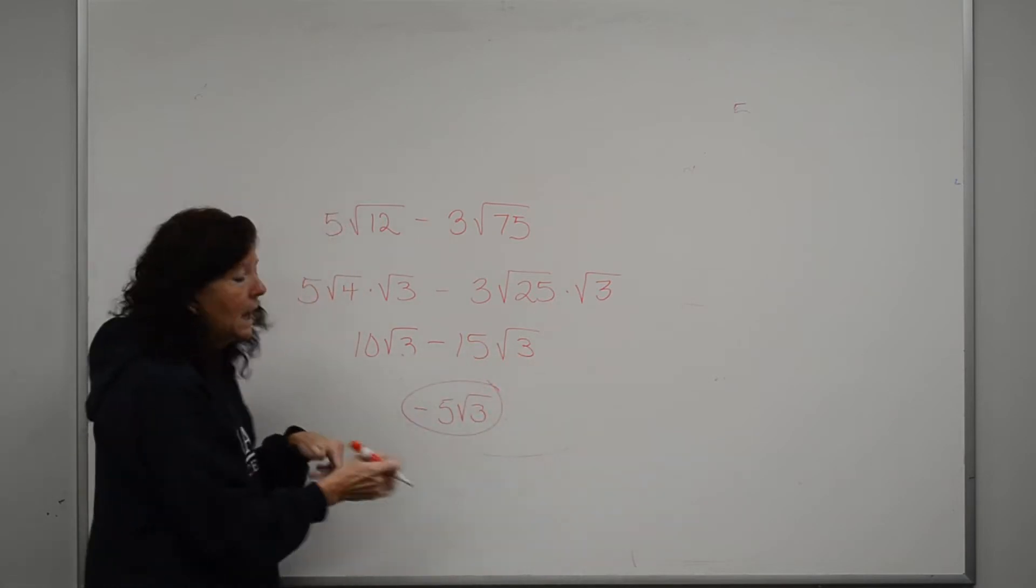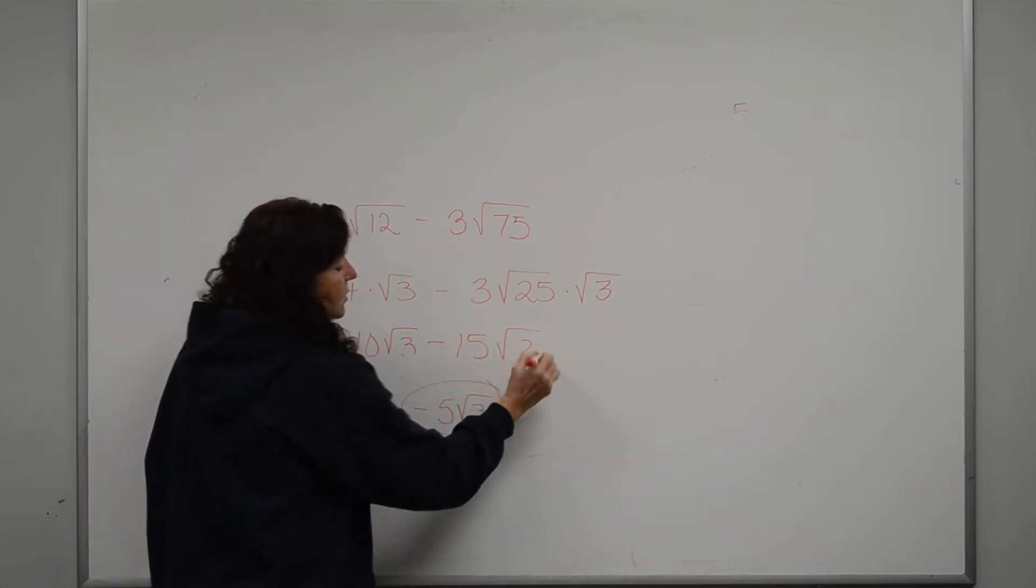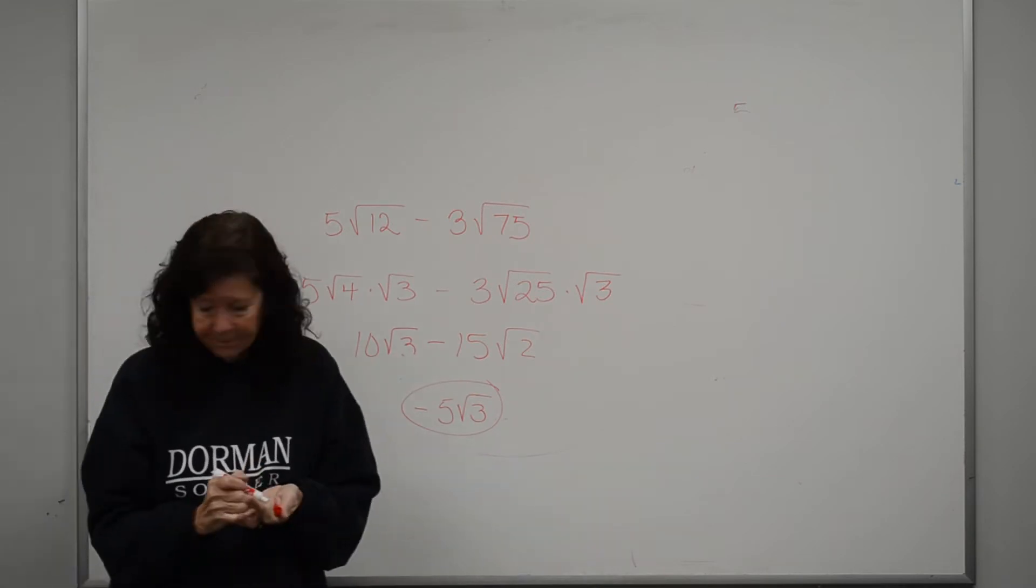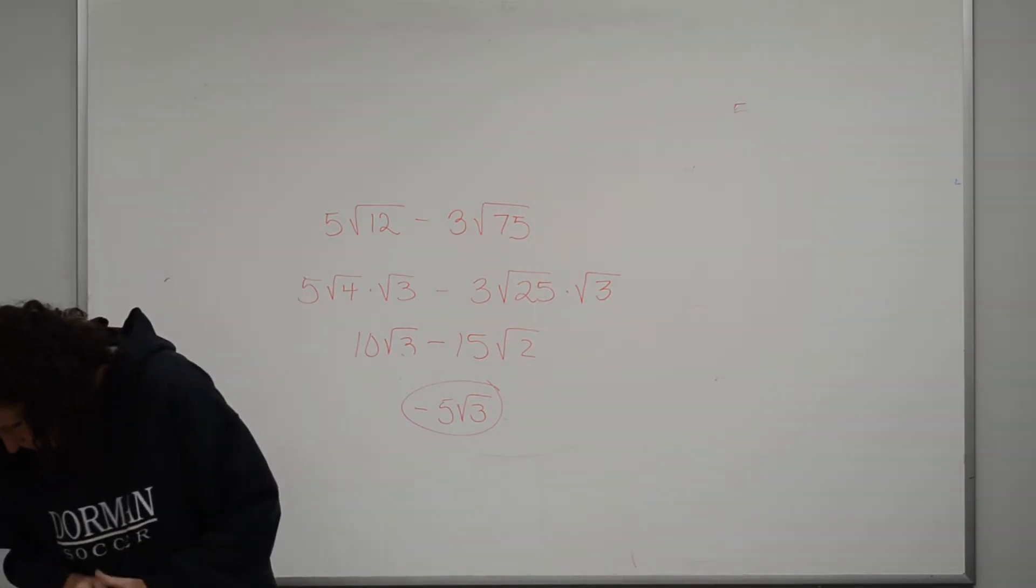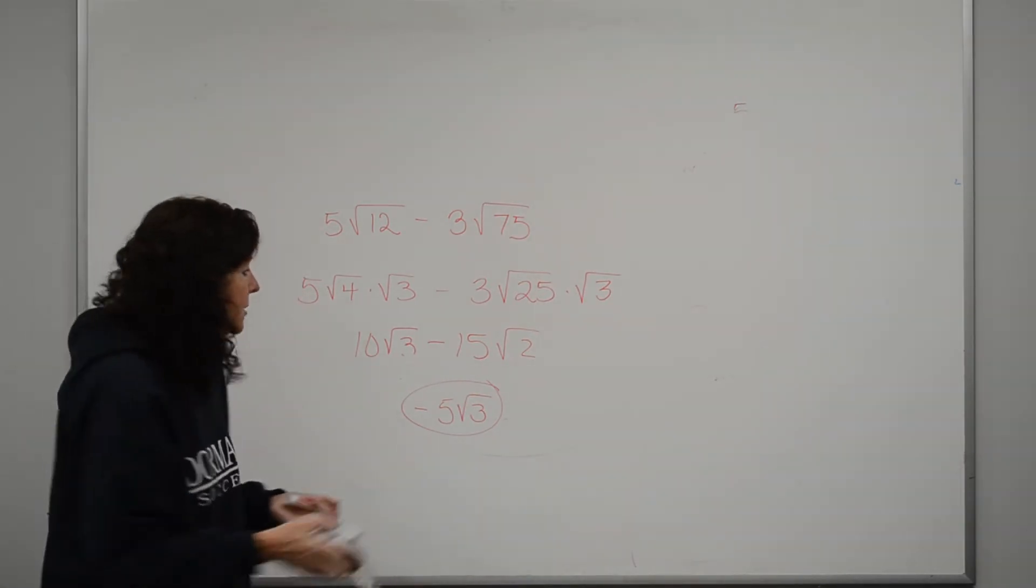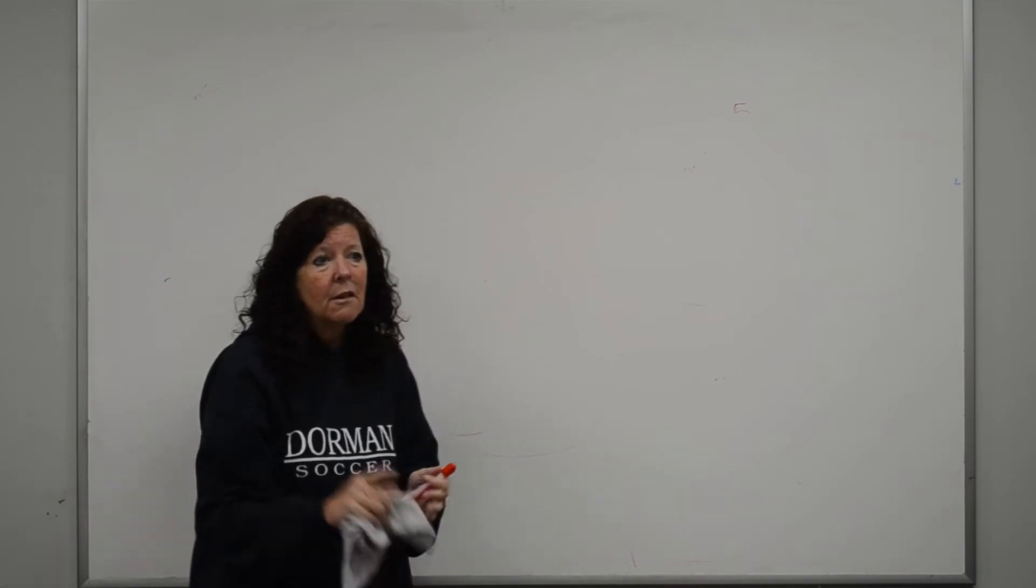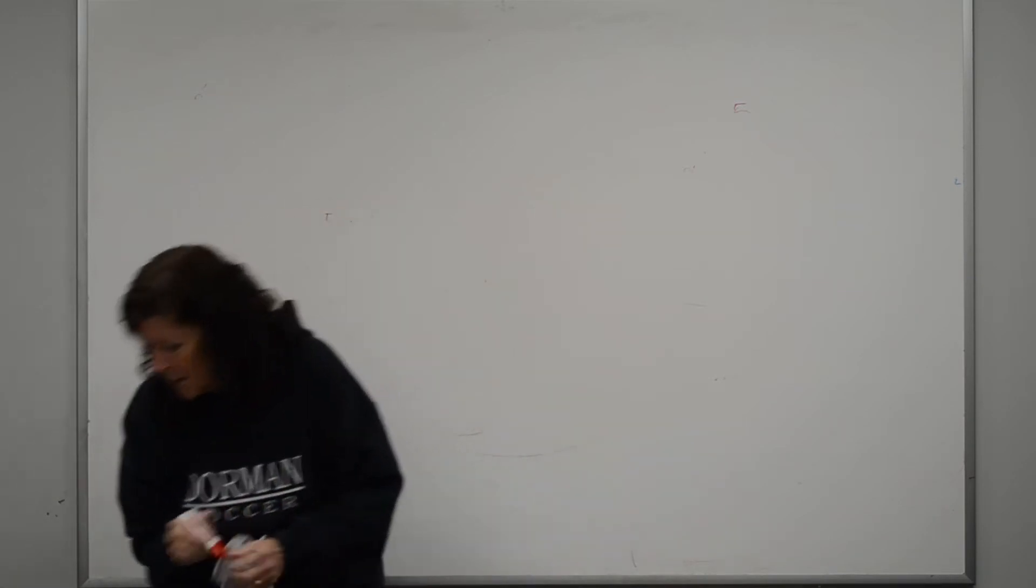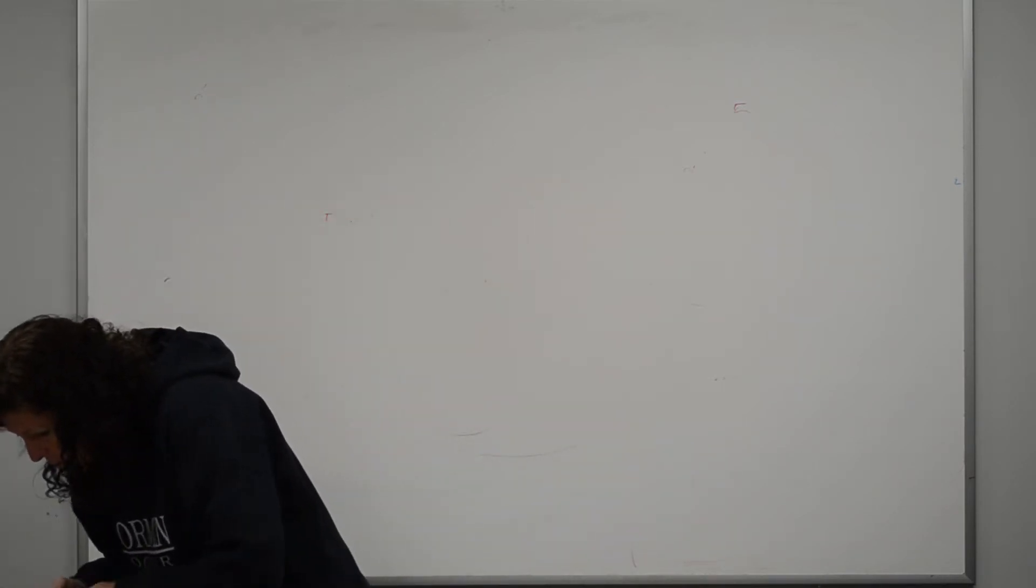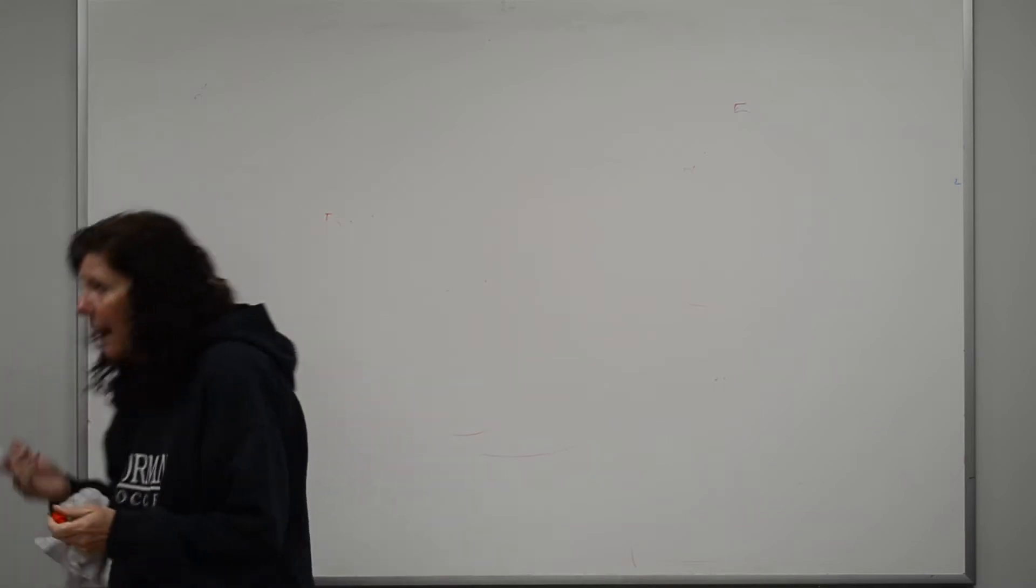Now, if they don't match, let's say that was a 2. You cannot combine them. If you're multiplying, remember you can multiply what's outside of the square roots together and what's underneath the square roots together. Sometimes you might want to do that.